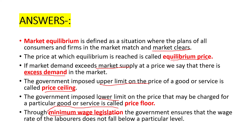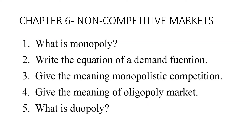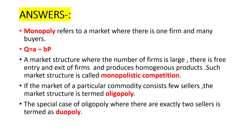Now, the last chapter of microeconomics — non-competitive markets. The questions include: what is monopoly; write the equation of demand function; give the meaning of monopolistic competition; give the meaning of oligopoly market; and what is duopoly. Monopoly refers to a market where there is only one seller but there are many buyers.